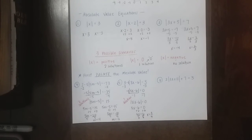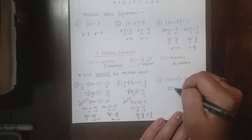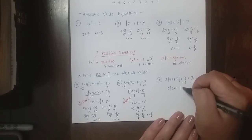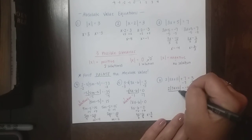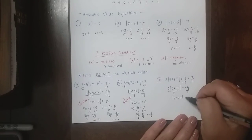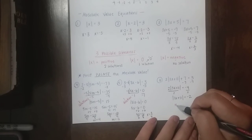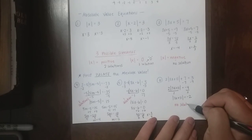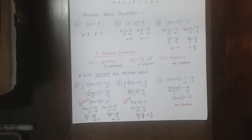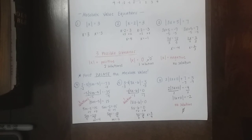For the last example, same thing — I start by getting rid of the 7, so I have 2 times the absolute value equals negative 4. Then I divide by 2 to get the absolute value of 3x plus 11 equals negative 2. I can stop right there because my absolute value equals a negative number — that means no solution. You can write 'no solution' or use the symbol, which is a 0 with a slash through it. So you're going to have 2 solutions, 1 solution, or no solution.